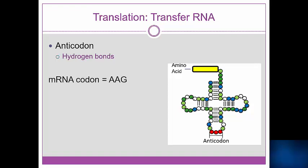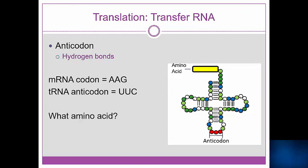Let's consider an example with an mRNA codon of AAG. What would the tRNA anticodon be? Yes, UUC. The same base pairing rules apply. Now, which amino acid will this tRNA be carrying? Pause for a moment and think about this one. If you said lysine, you're correct. The mRNA codon AAG corresponds with the amino acid lysine.